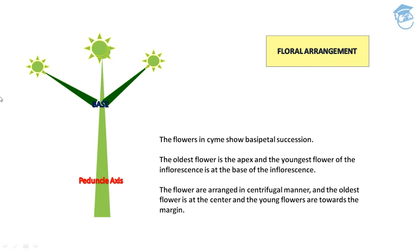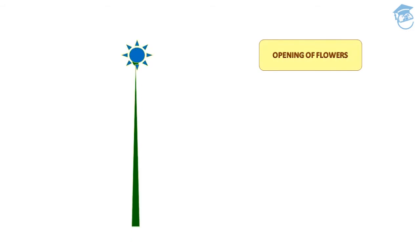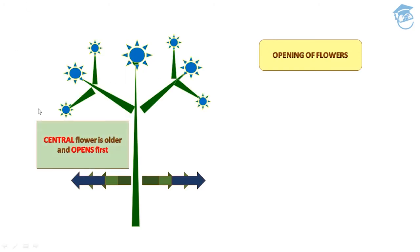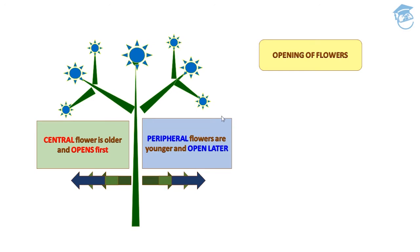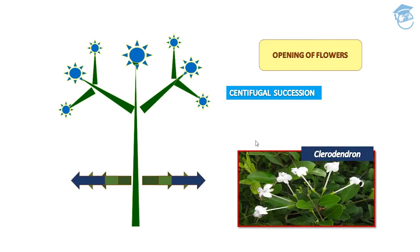In cymose inflorescence, flowers are arranged in a centrifugal manner. The oldest flower is at the center and younger flowers are towards the margin. The central flower opens first, then peripheral (lateral) flowers, which are younger, open later. This is centrifugal succession, seen in Clerodendron.